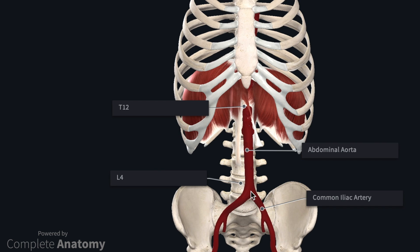The abdominal aorta supplies the abdominal organs, the abdominal wall, and the inferior aspect of the diaphragm. It begins at the level of T12 as a continuation of the descending thoracic aorta, passing behind the diaphragm through the aortic hiatus. It continues inferiorly to the level of L4 where it bifurcates into the common iliac arteries.